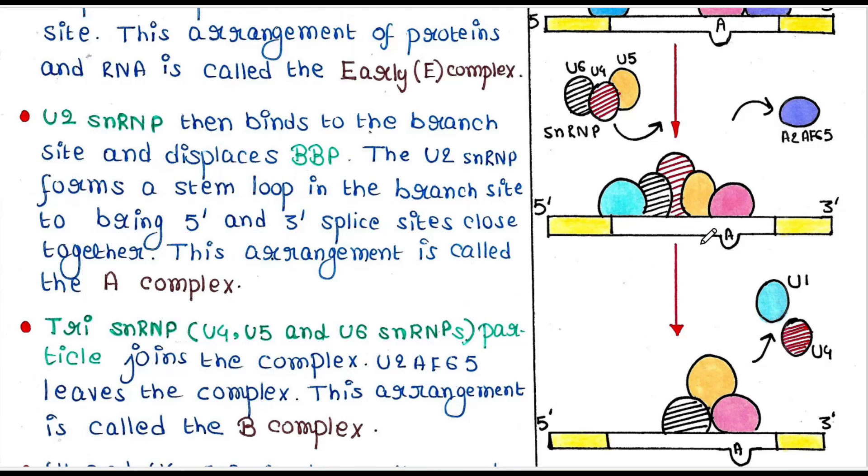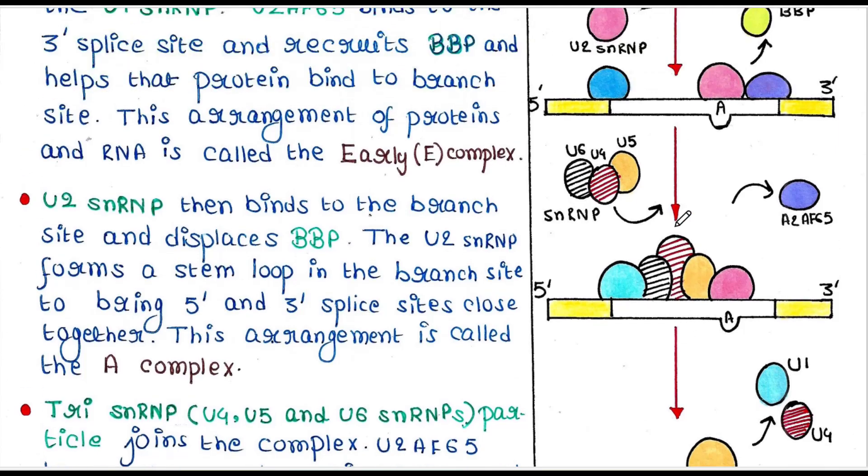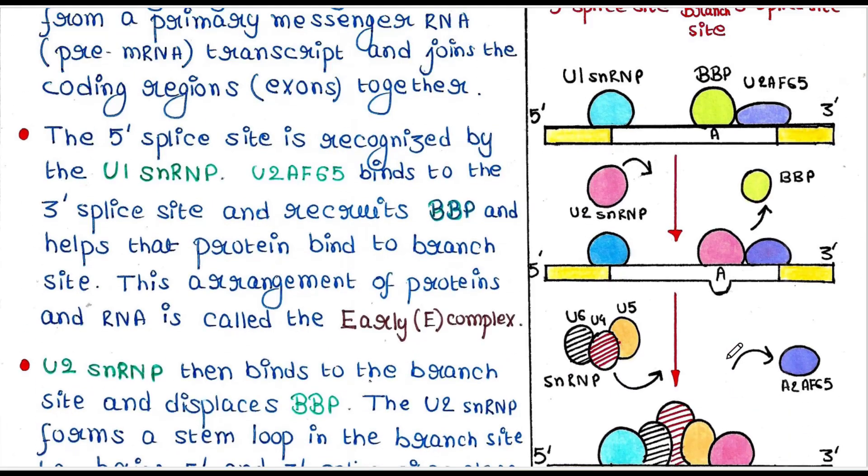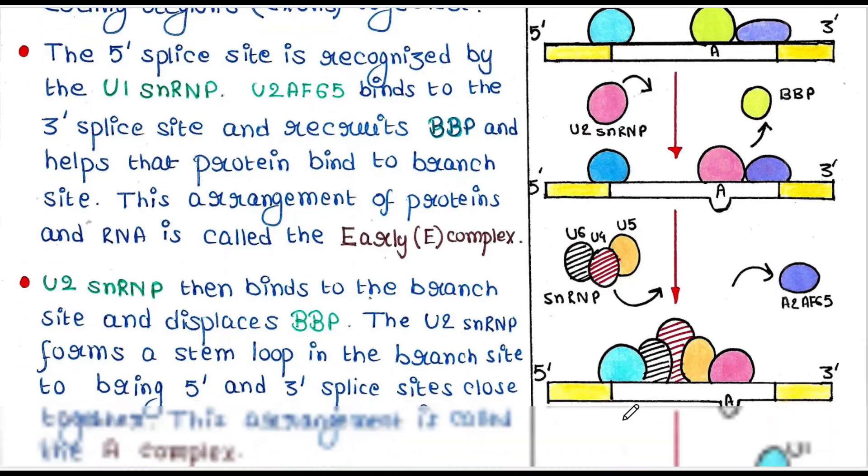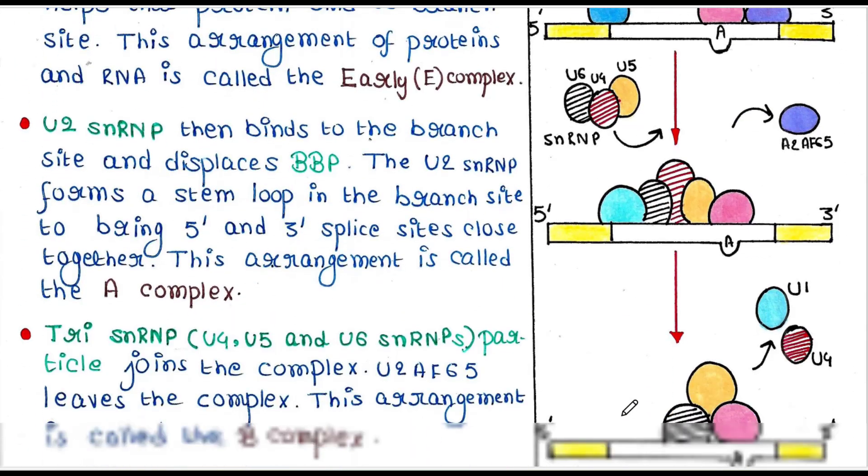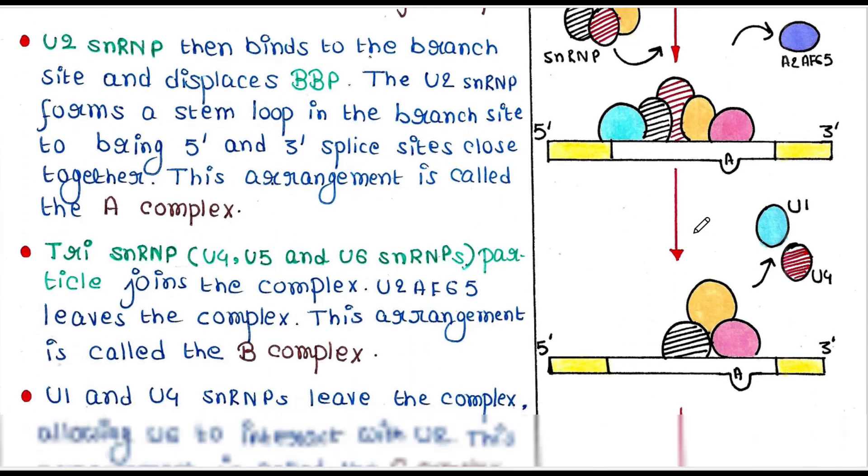In the B complex, tri-snRNP is there, U2 snRNP is there, and U1 snRNP is there. This is the B complex.